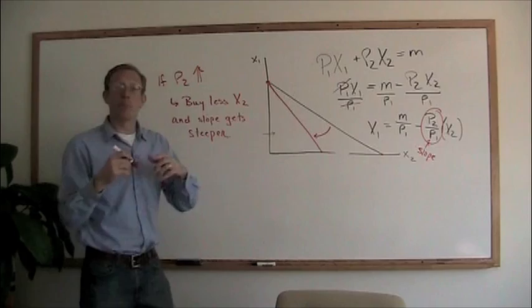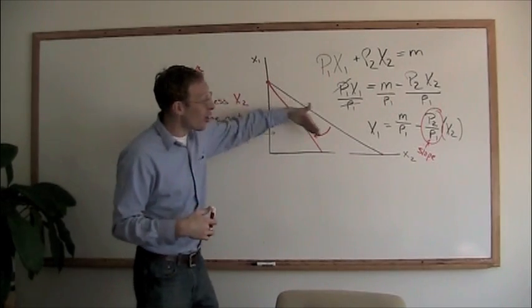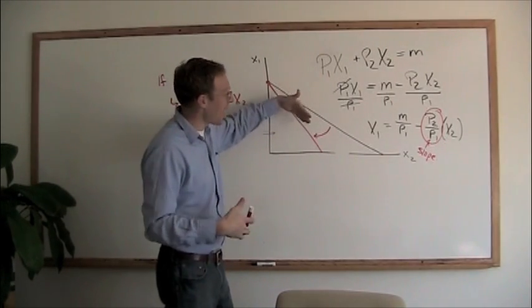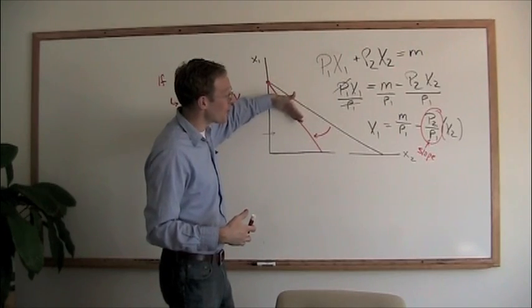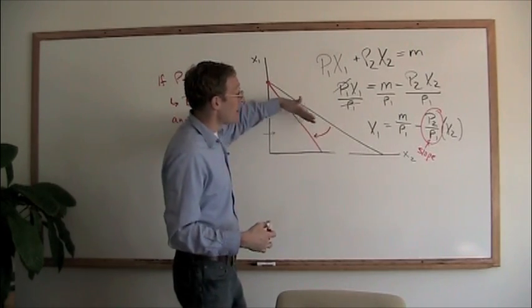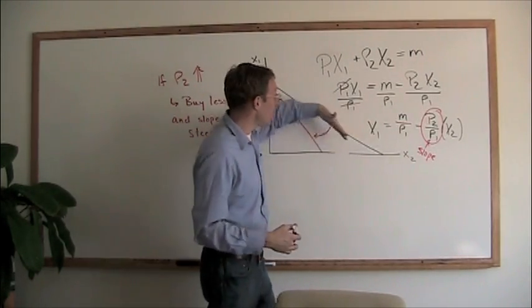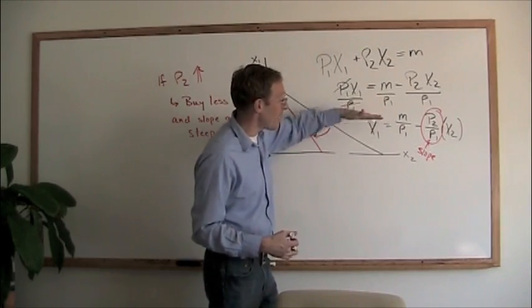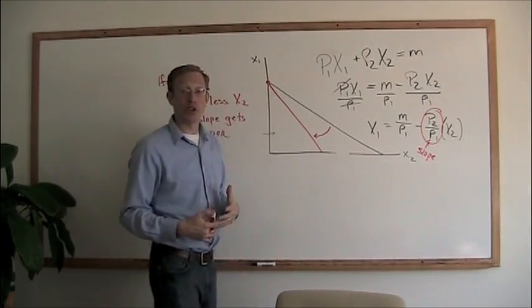And of course, if the price were to fall, the opposite would happen. If the price of x2 falls, then you can buy more of it. The slope gets flatter, and so the curve would rotate this way. You'd be able to buy more of good x2.